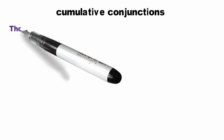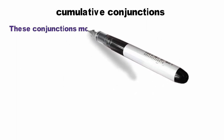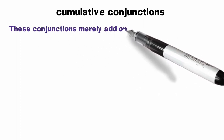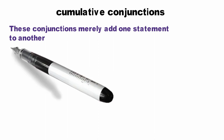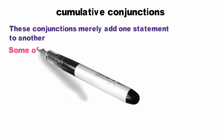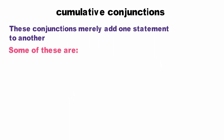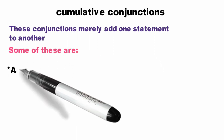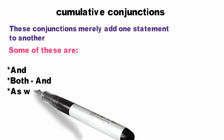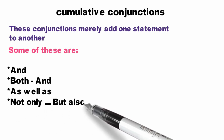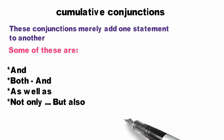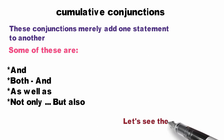Cumulative or copulative conjunctions — as the name suggests, these conjunctions merely add one statement to another. They copulate statements. Some of these are: and, both...and, as well as, not only...but also, etc. Let us see some examples.